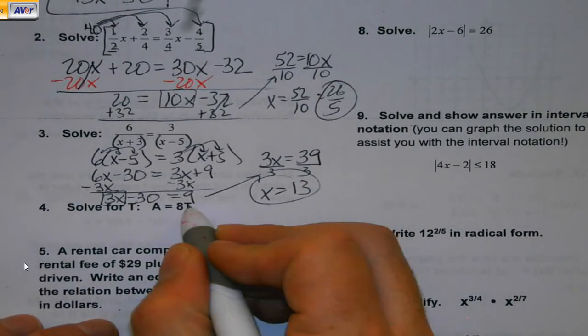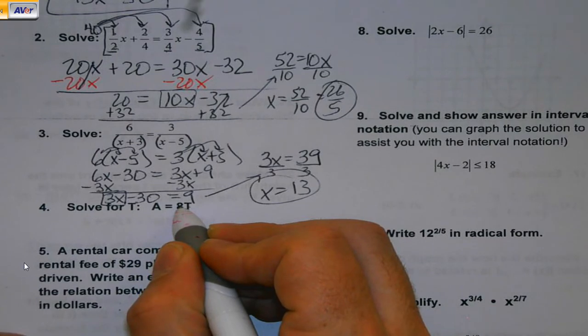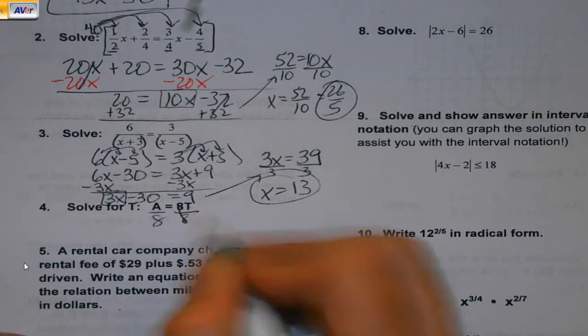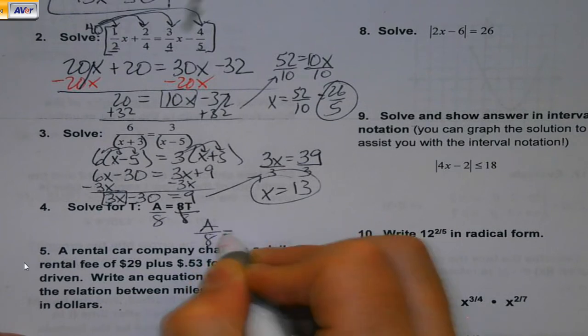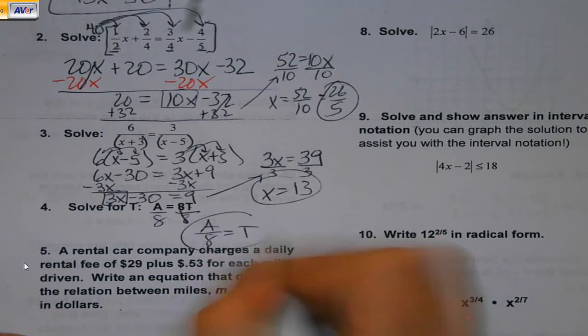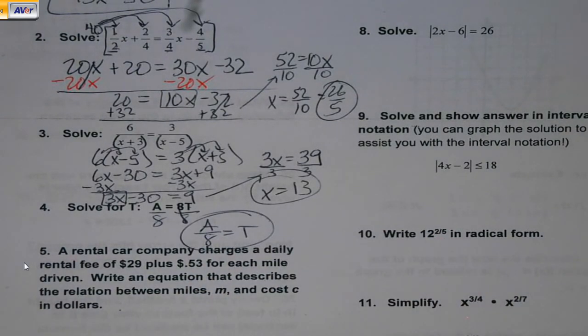Solve for T. What am I doing to T? Multiplying it by eight. What's the opposite? Divide it. Yeah, T is by itself, isn't it? Sometimes they're going to be pretty straightforward like that. Take advantage.